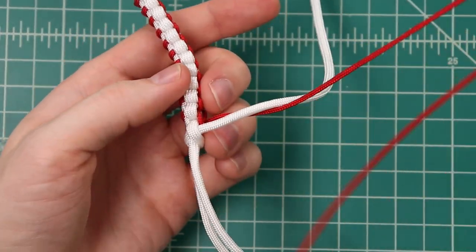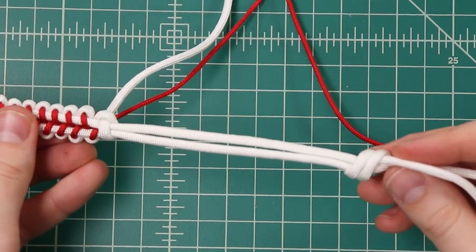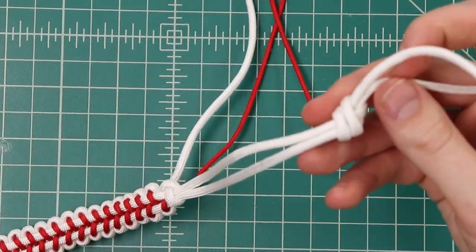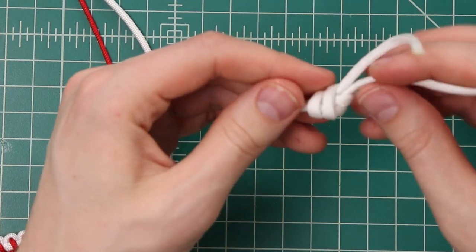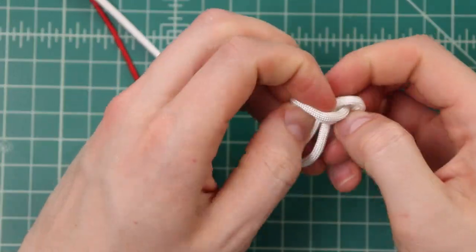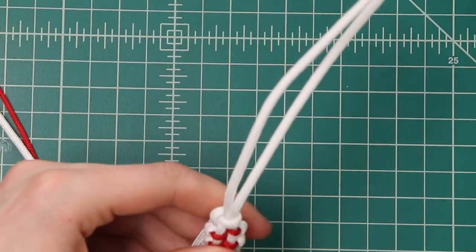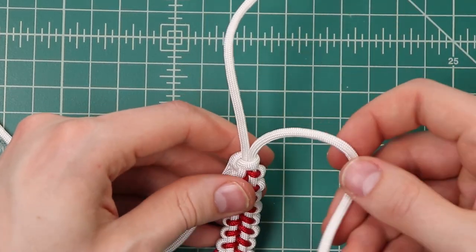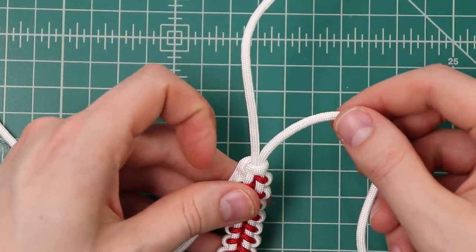So we'll eventually clip the ends there but first we can make our toggle knot and then clip all of our ends at the same time. So we'll set those out of the way. And this toggle knot is pretty easy but we'll go through it here. We've used it in a couple different bracelet tutorials.